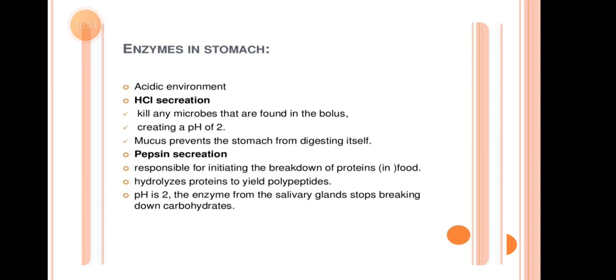The enzymes found in the stomach work in an acidic environment. HCl secretions kill any microbes found in the bolus and create a pH of 2. Mucus prevents the stomach from digesting itself. Pepsin secretion is responsible for initiating the breakdown of protein food, hydrolyzing protein to yield polypeptides. At pH 2, the enzymes from the salivary gland stop breaking down carbohydrates.